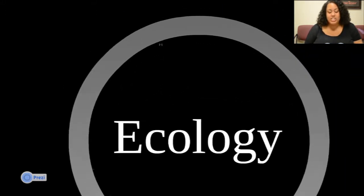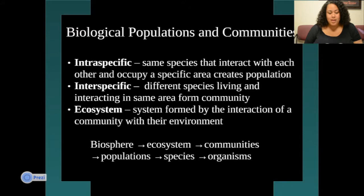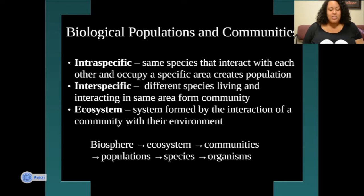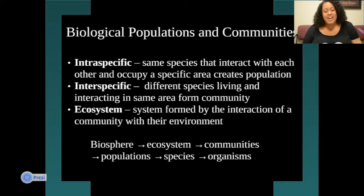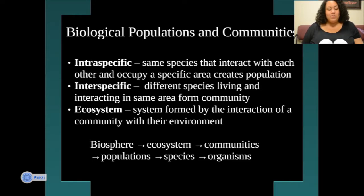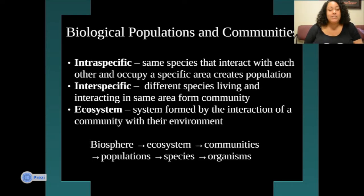Let's start with ecology — basically biological populations and communities. Intraspecific are the same species that interact with each other and occupy a specific area, creating a population. Interspecific are different species living and interacting in the same area, forming a community. An ecosystem is a system formed by the interaction of a community with their environment.